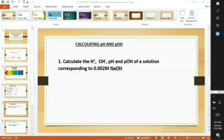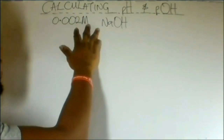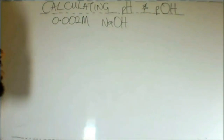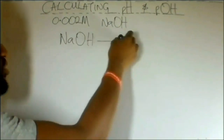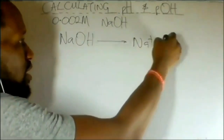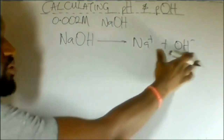Now let's take an example in calculating pH and pOH. Example 1: Calculate the H⁺, OH⁻, pH, and pOH of a solution corresponding to 0.002 molar sodium hydroxide. The question gave us a 0.002 molar sodium hydroxide solution. According to Arrhenius' concept, if a base is dissolved in water, it should dissociate into ions. NaOH dissociates in water to form Na⁺ and OH⁻.